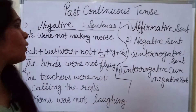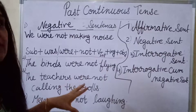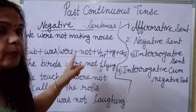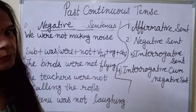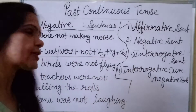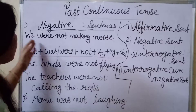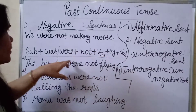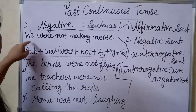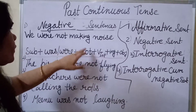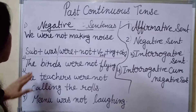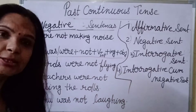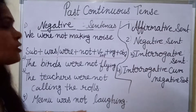Now I will talk about negative sentences. The structure is: Subject + was/were + not + verb's first form + ing + object. The important thing here is 'not' because we are making negative sentences. For example: We were not making noise. The birds were not flying. The teachers were not calling the rolls. Meenu was not laughing.